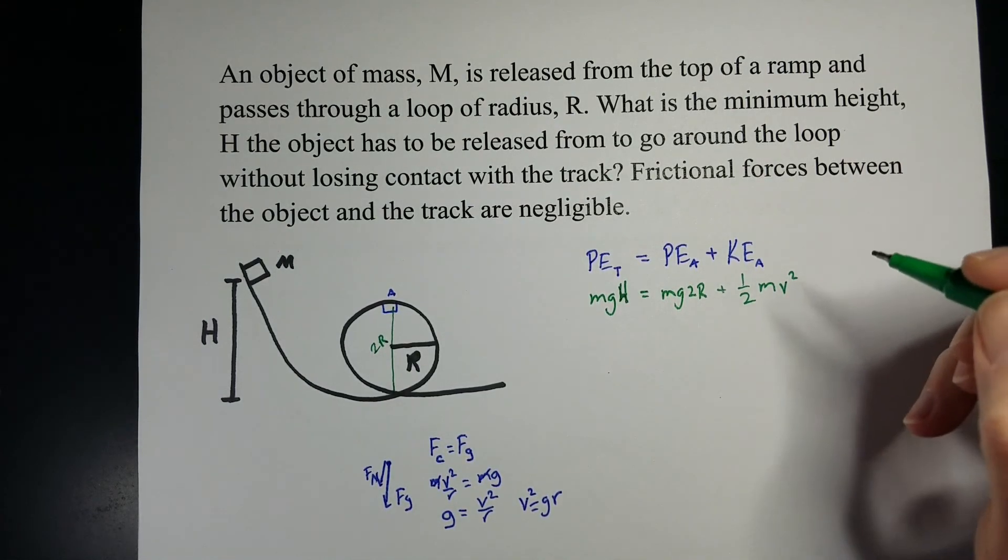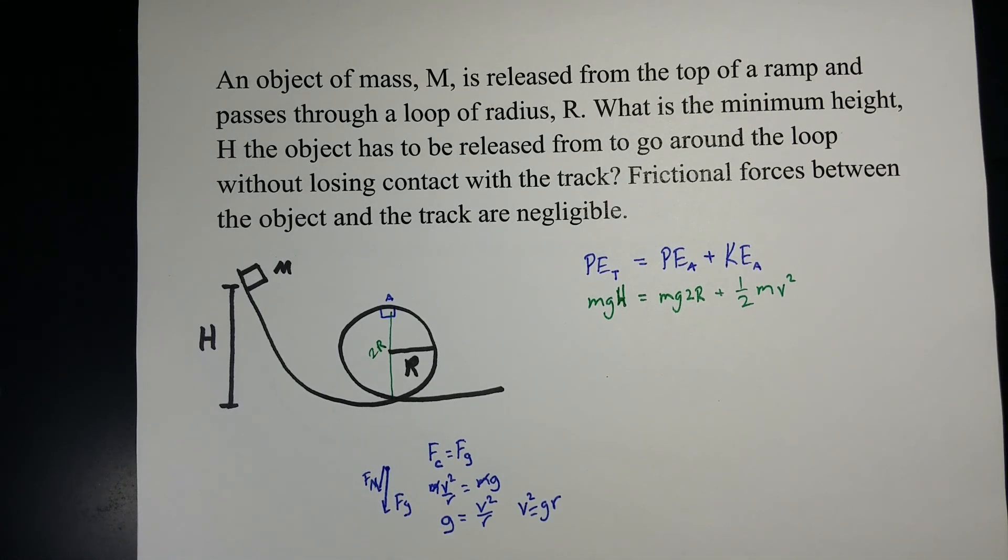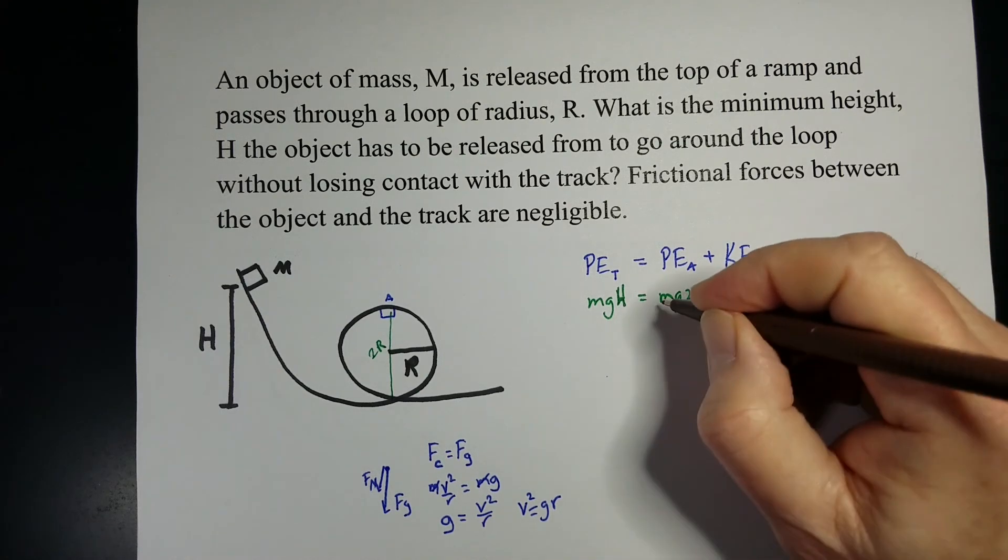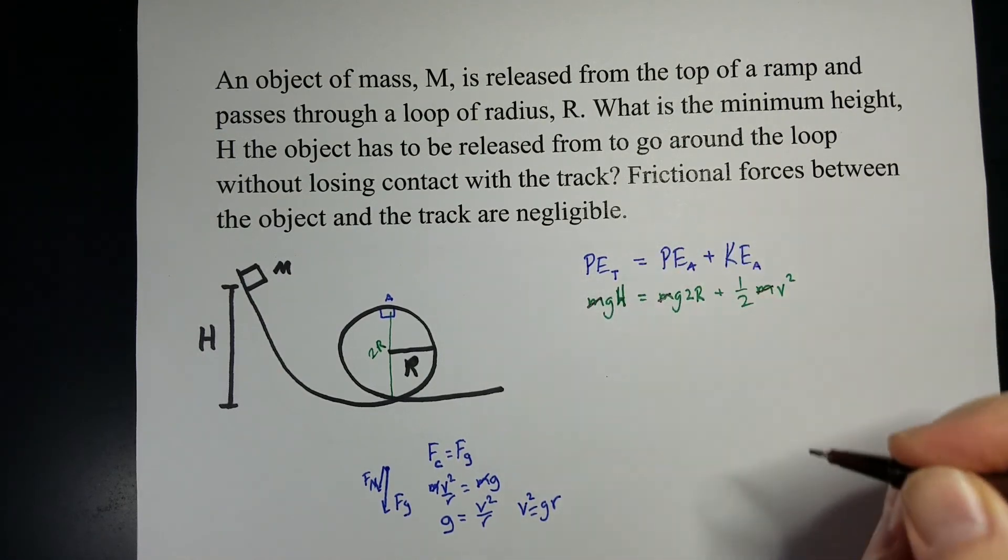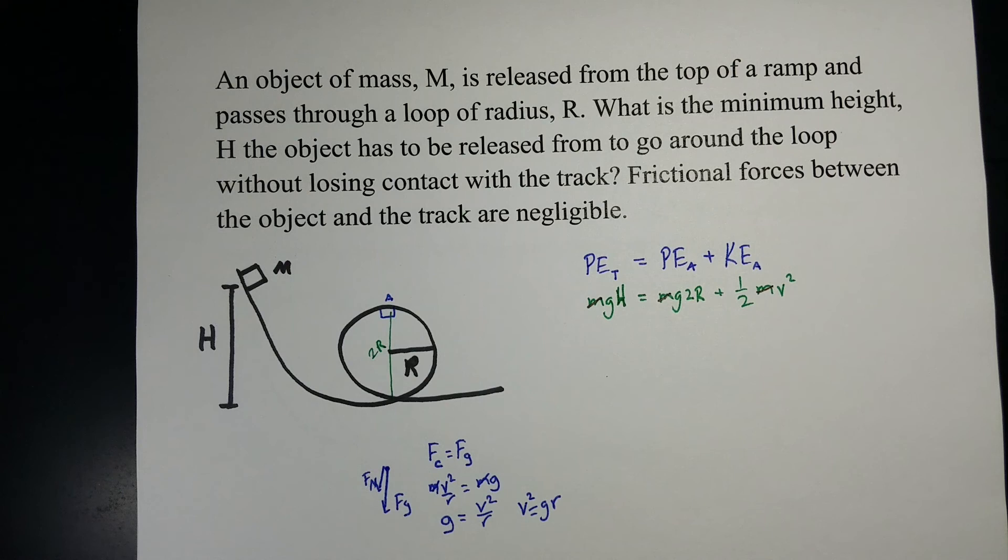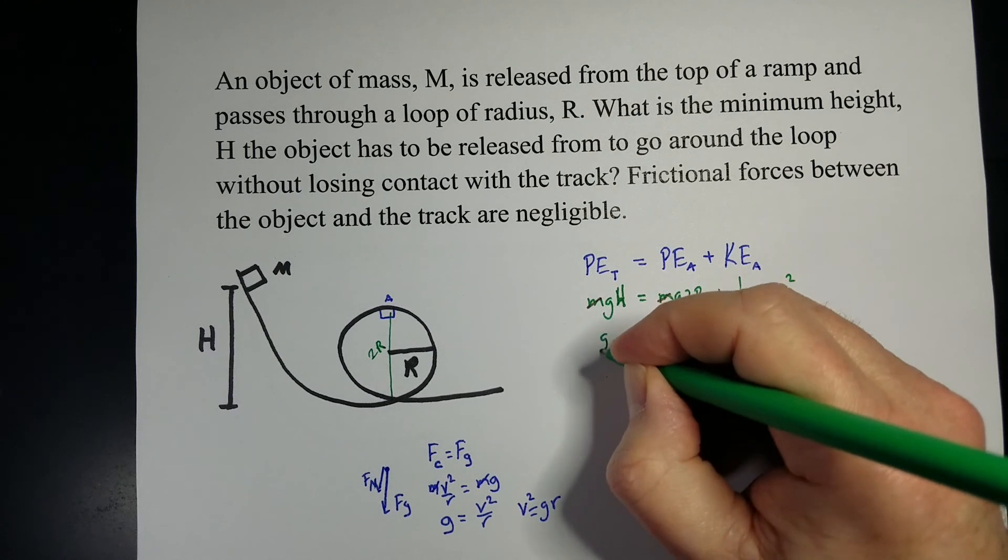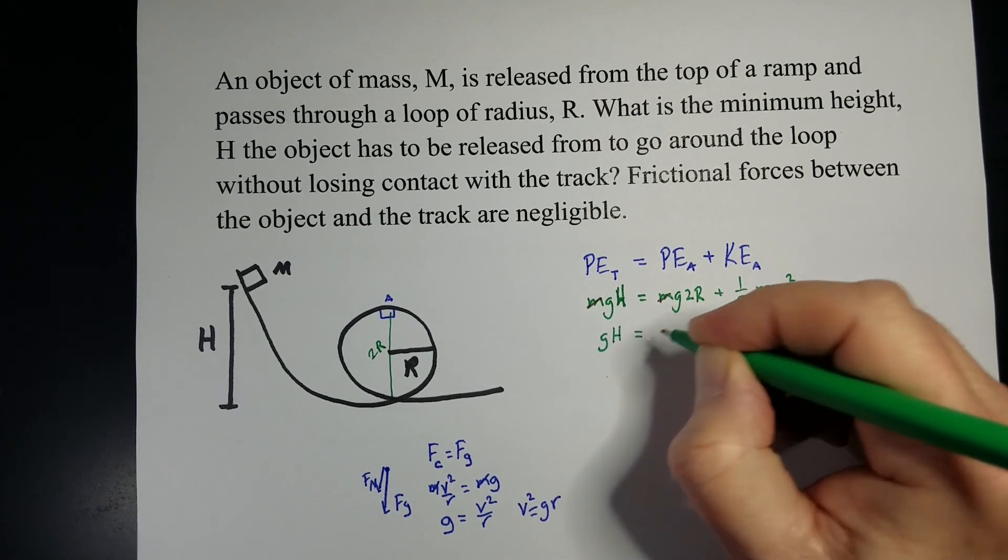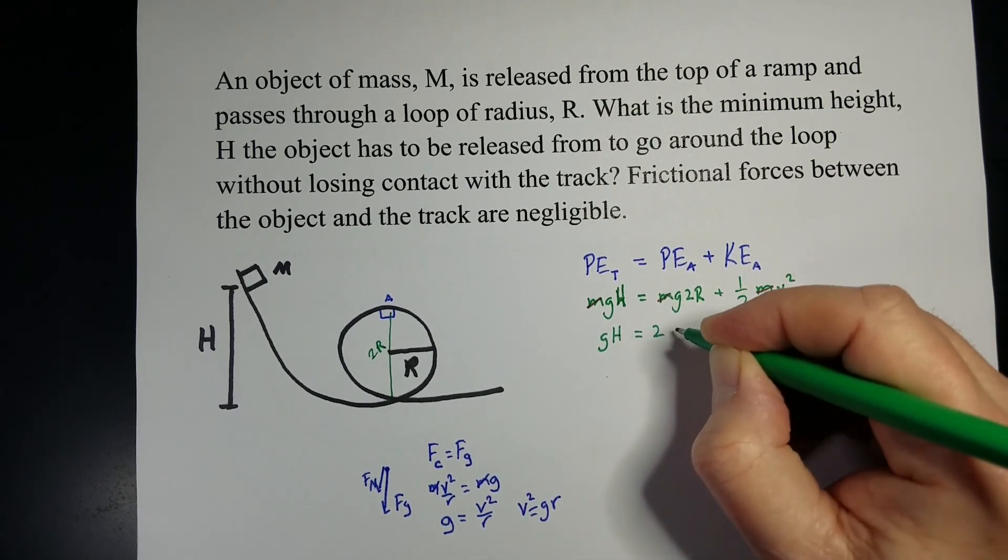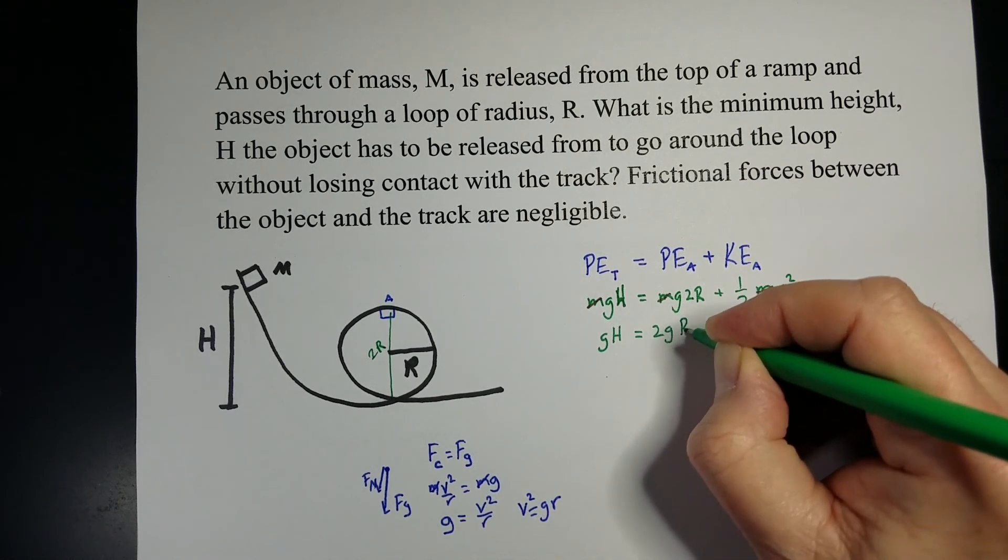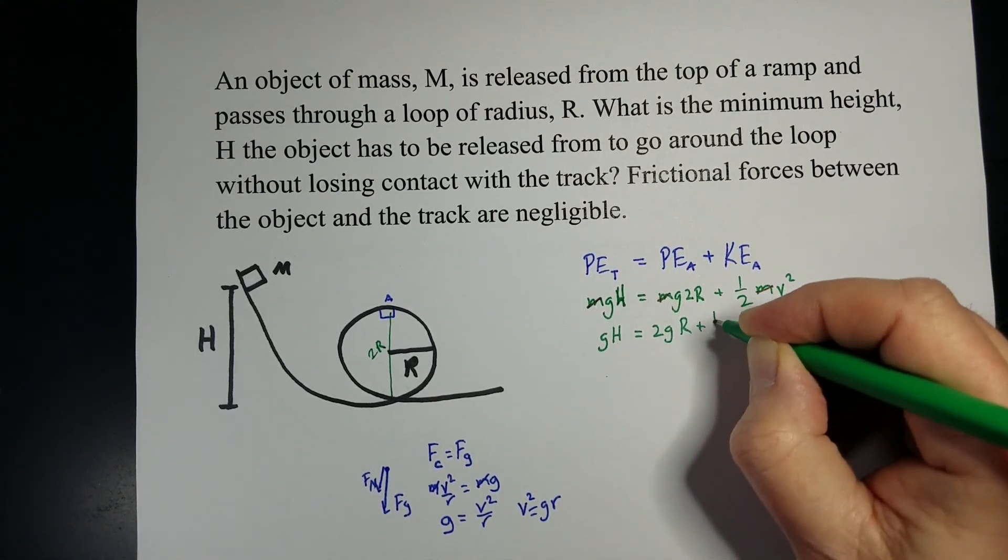Well, one thing I noticed is that we can get rid of these masses. There's one in each term, so each can fall out, so that simplifies things a little bit. Now, let's see, we've got gh equals 2gr, plus 1 half, we've got velocity.